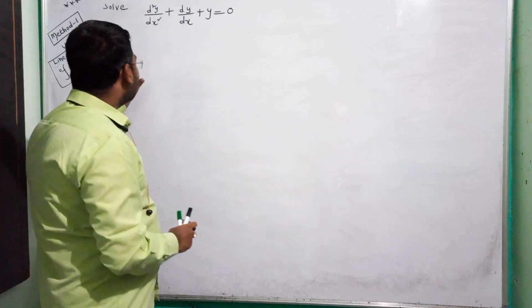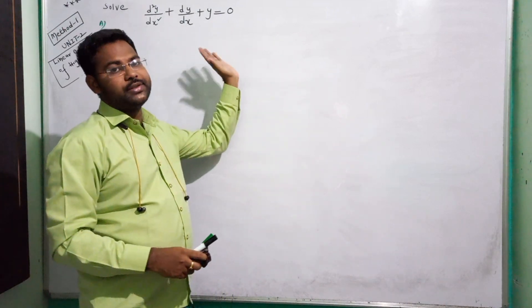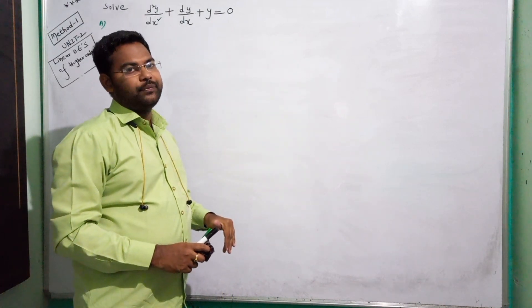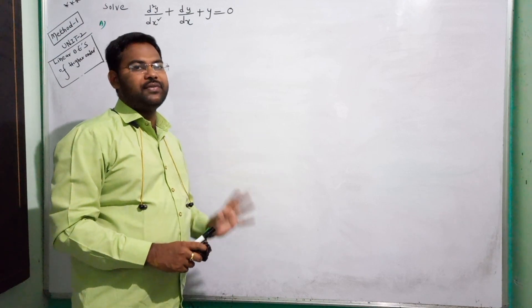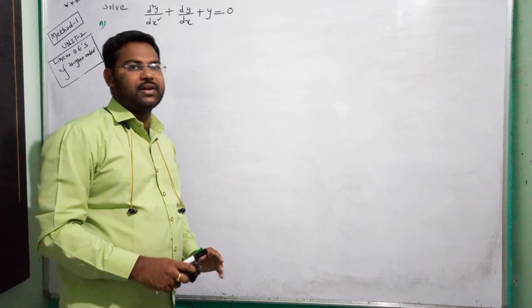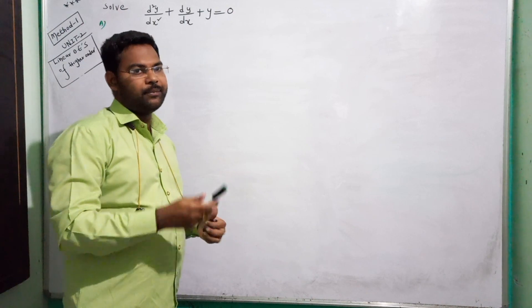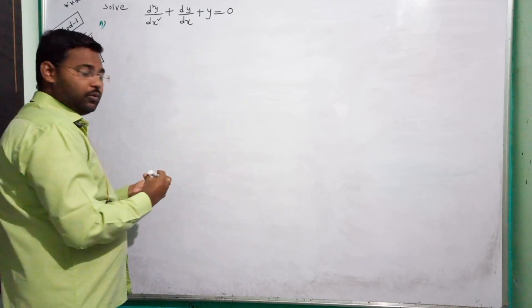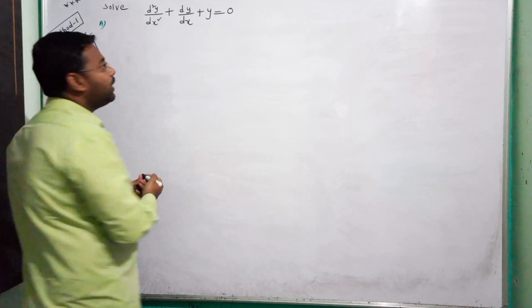Method 1 is complementary functions. If there is method 1, we will find the method 1. That means, complementary functions of the problem. So, roots for the complementary function of the problem.